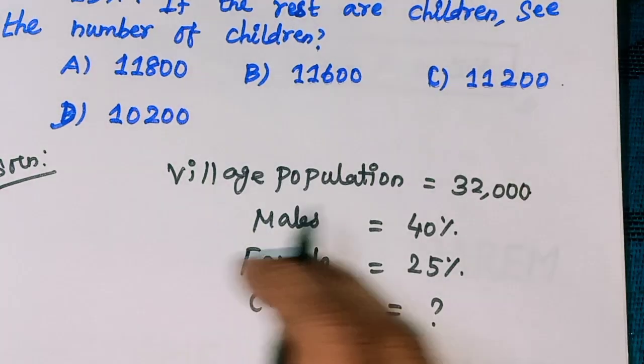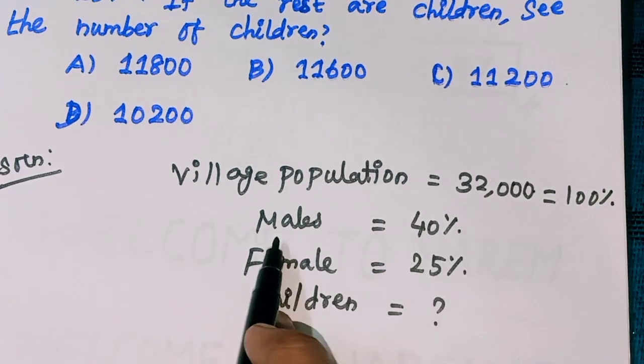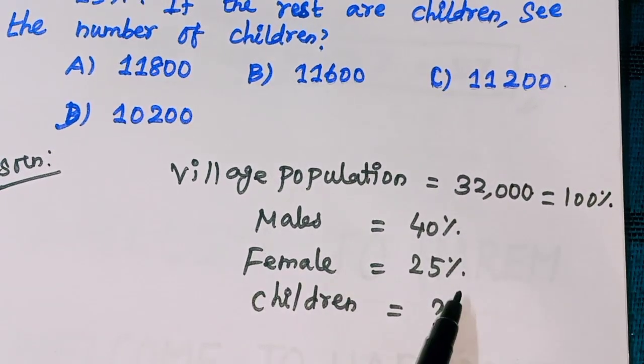So village population 32,000 equals 100%. Males 40%, female 25%.